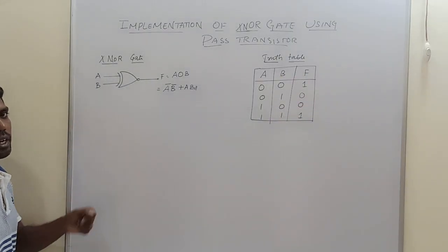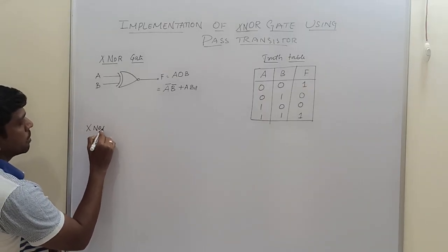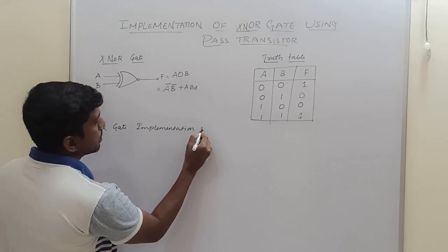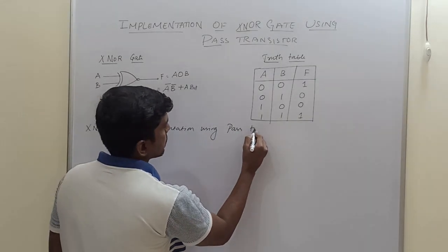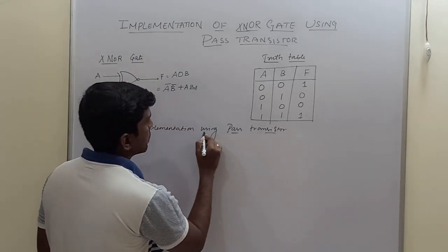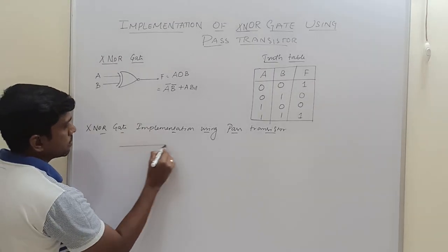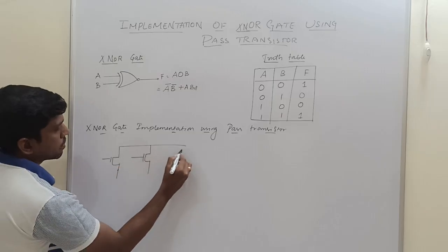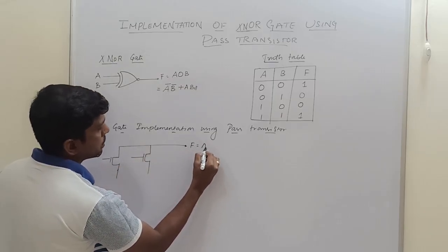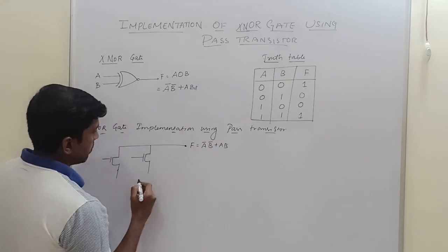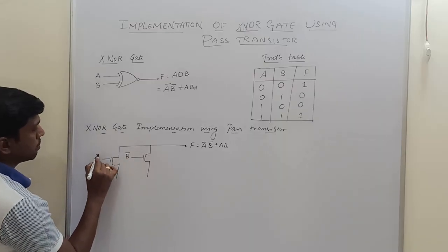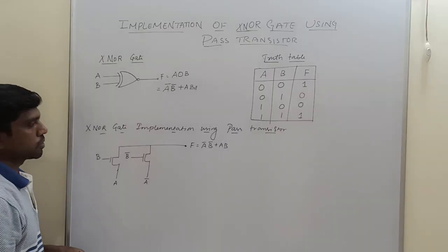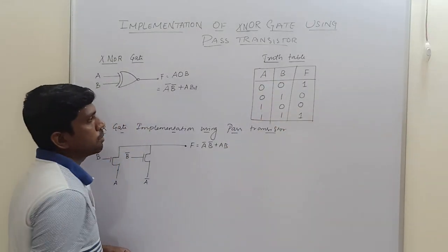Now I am going to implement this XNOR gate using pass-transistor logic. So here I connect two pass transistors. We will get the output from here. F equals A̅B̅ + AB. B̅, B, A, A̅ — B is the control signal, and A and A̅ are the input signals. I just substitute the value A and B from the truth table and we will find the result.